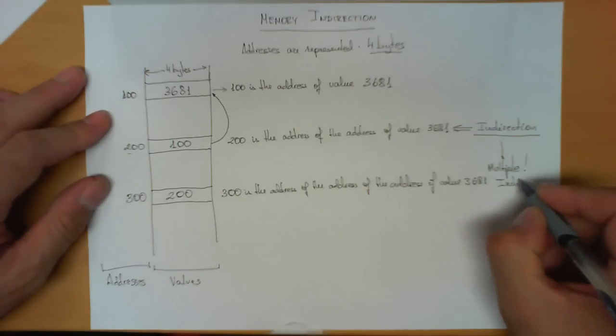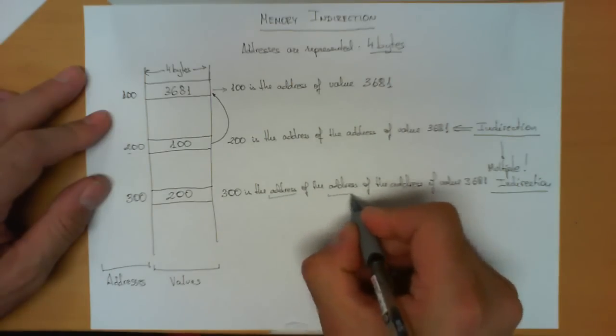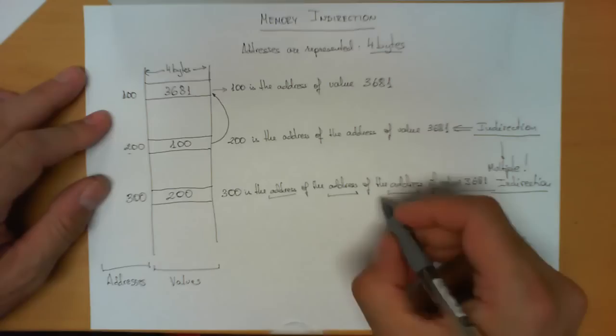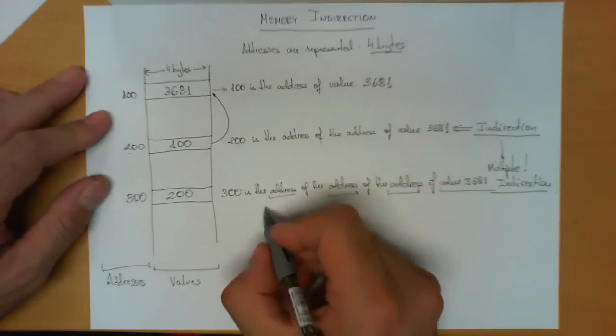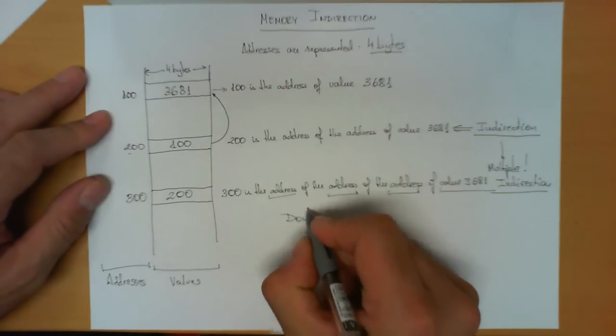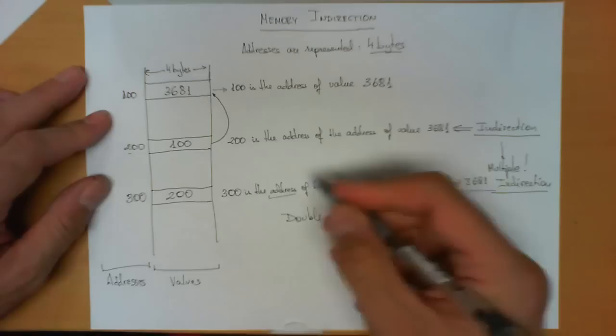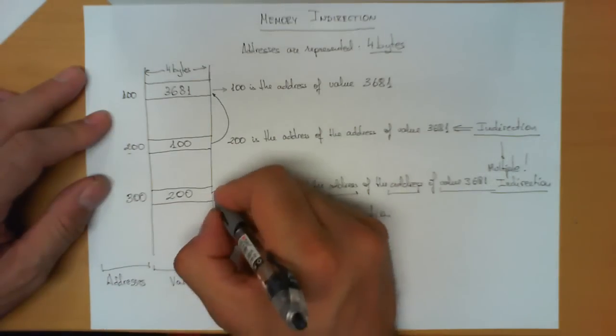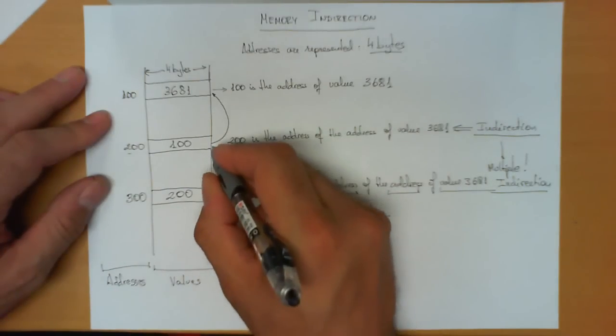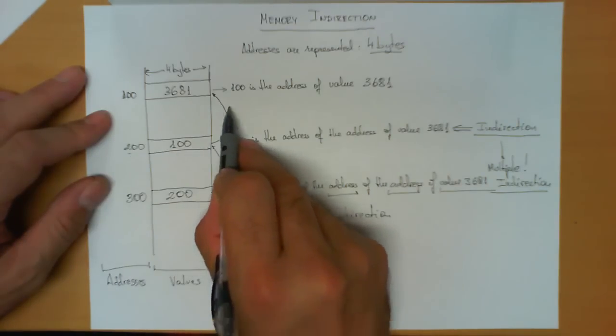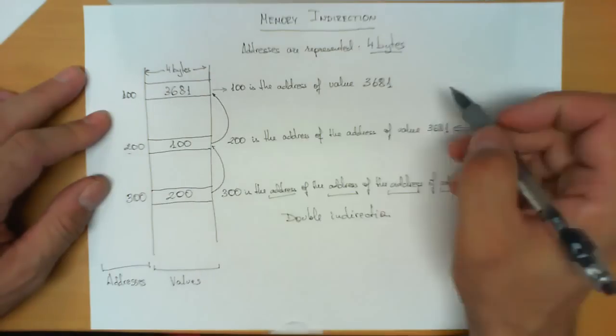So this is called a multiple indirection, because again, rather than accessing the data directly, what we do is first we go to position 300, we find the address 200, the value 200 which is itself an address, and then we make a double indirection until we finally reach from position 200, we obtain the value 100, and we reach eventually the value.